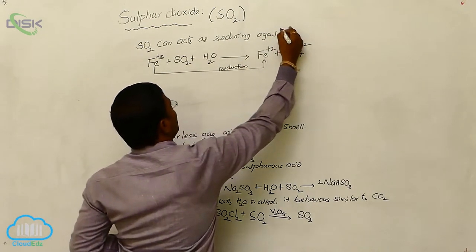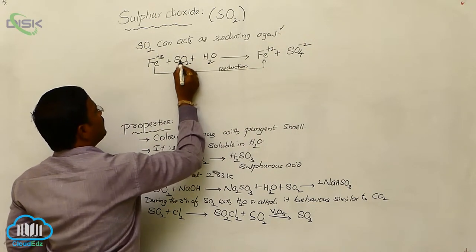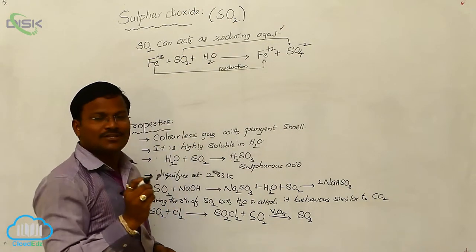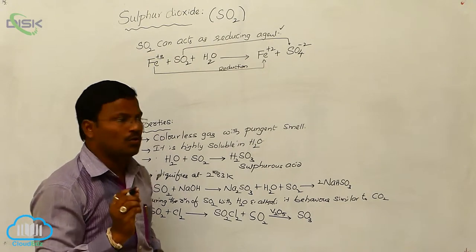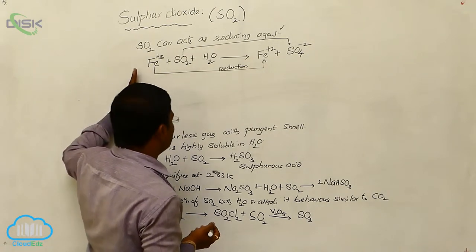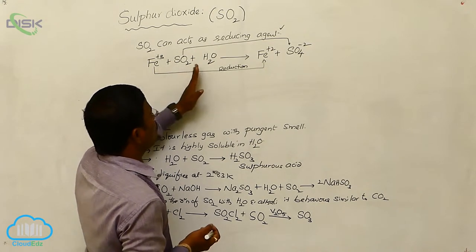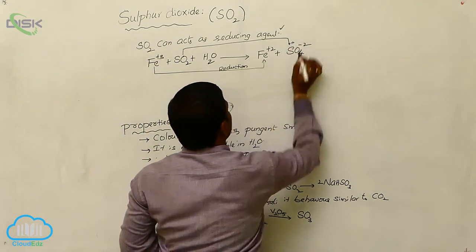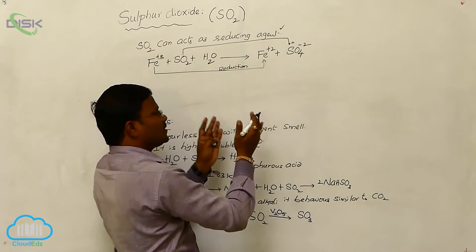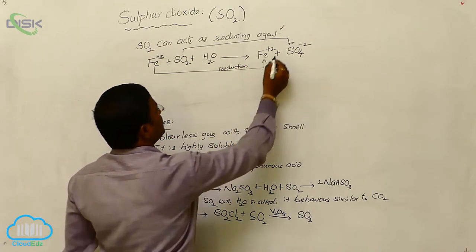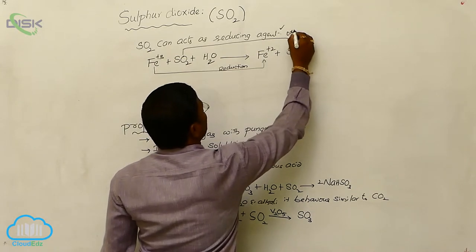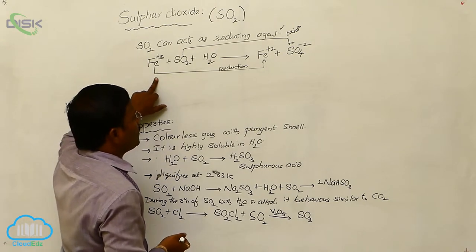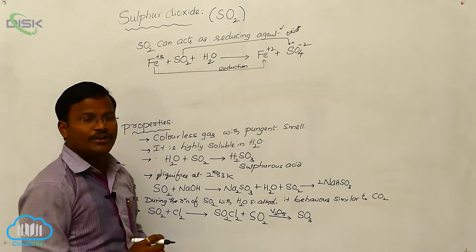Hence, sulfur dioxide is considered a reducing agent. During its reaction, sulfur dioxide undergoes oxidation. Because in sulfur dioxide, the oxidation state of sulfur is +4. When it reacts with Fe³⁺ ions in aqueous solution, SO₂ is converted into SO₄²⁻, in which the sulfur oxidation state is +6 — an increase in oxidation state from +4 to +6. This is called oxidation. By participating in oxidation, it reduces iron ions, hence it is called a reducing agent.